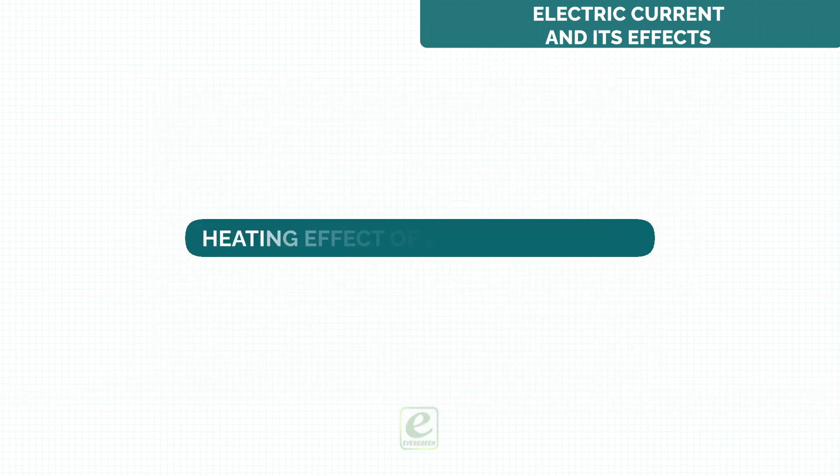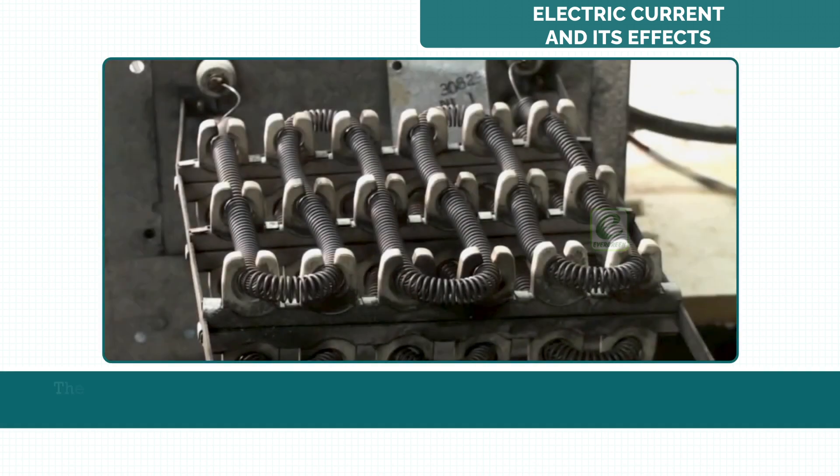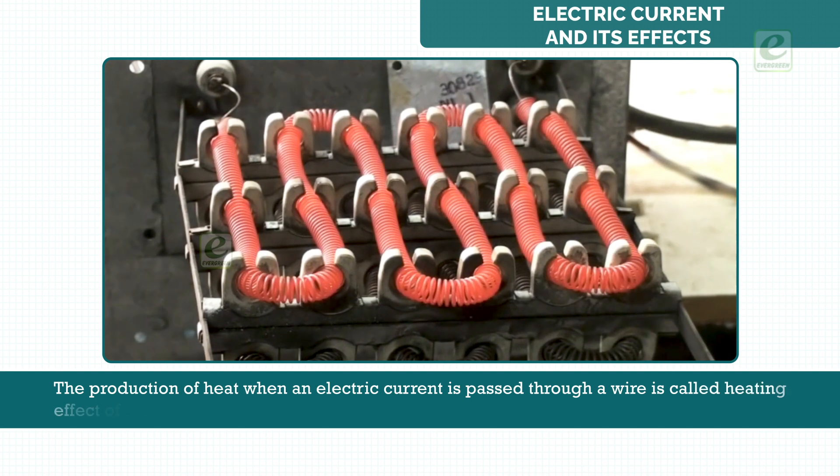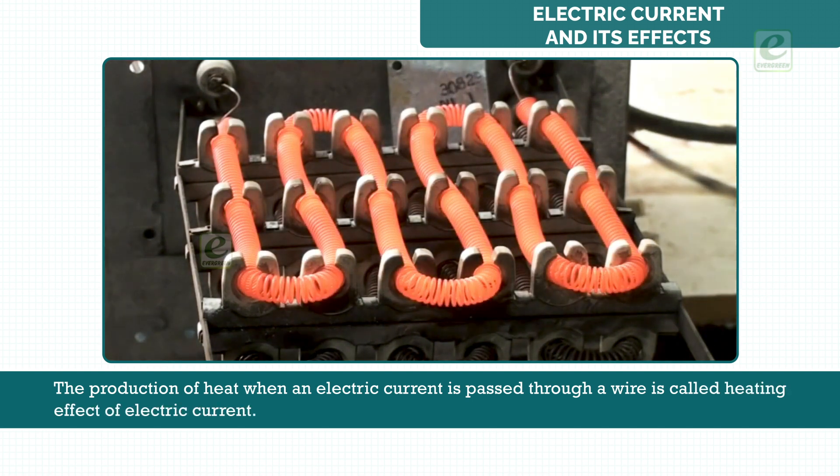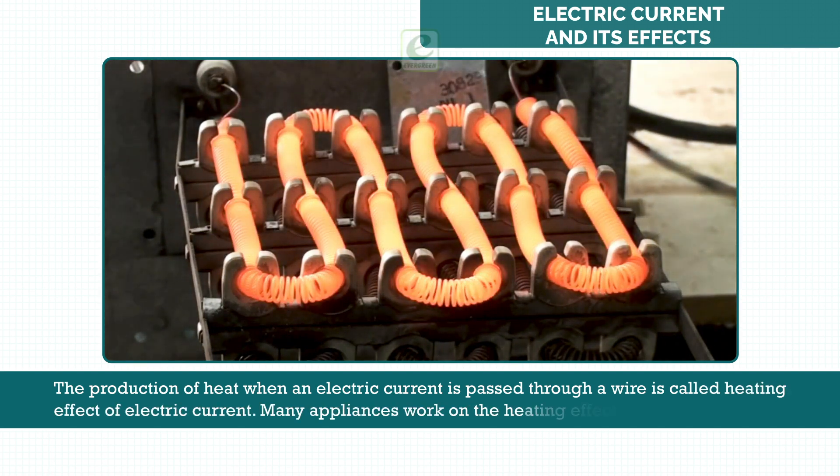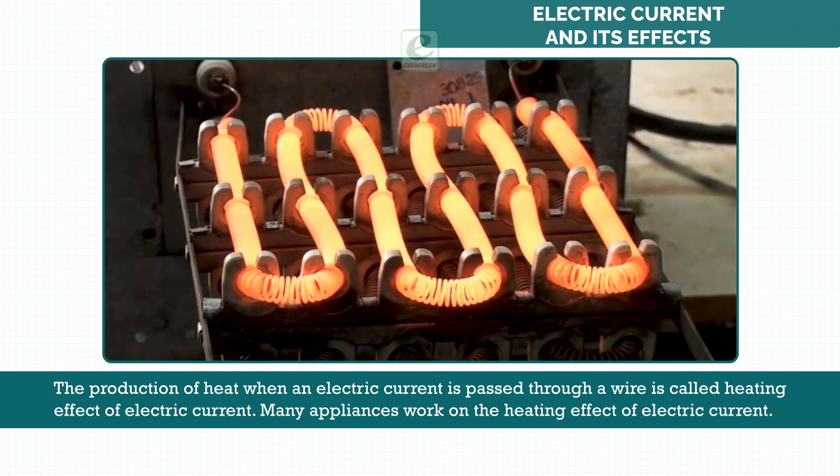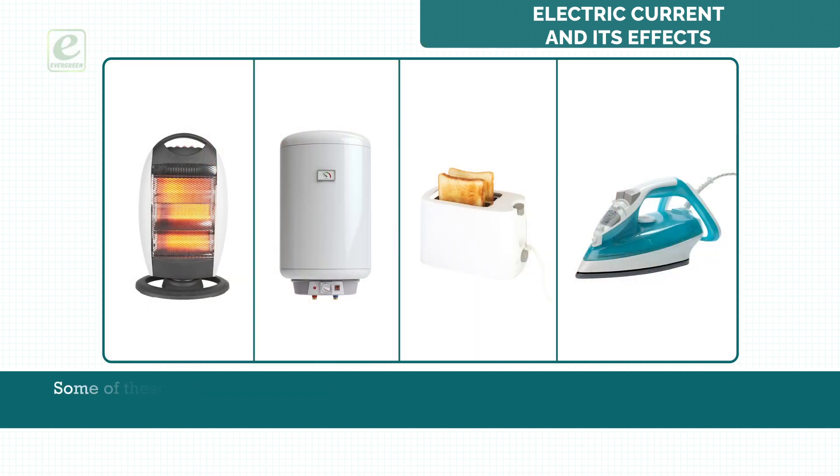Heating effect of electric current. The production of heat when an electric current is passed through a wire is called heating effect of electric current. Many appliances work on the heating effect of electric current. Some of these devices are electric heater, electric geyser, electric toaster, electric iron, etc.